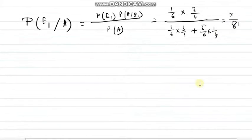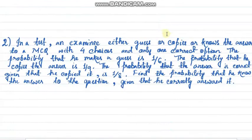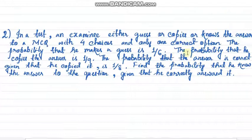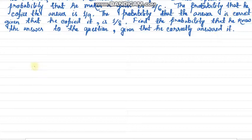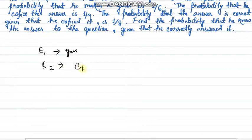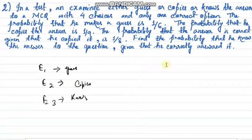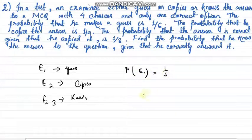I hope all of you understood this. Moving to the next sum: in a test, an examinee either guesses, copies, or knows the answer. Let E1 be guessing, E2 be copying, and E3 be knowing the answer. It is given that the probability he makes a guess is 1 divided by 6, and the probability that he copies is 1 divided by 9.